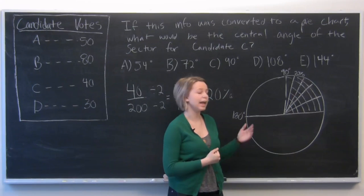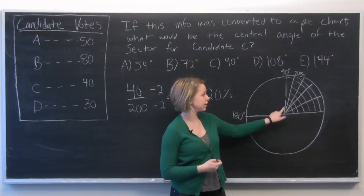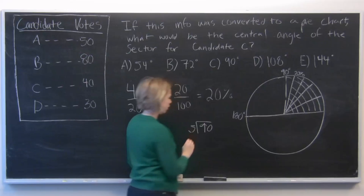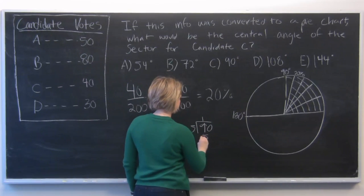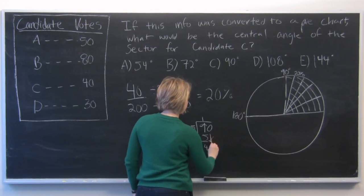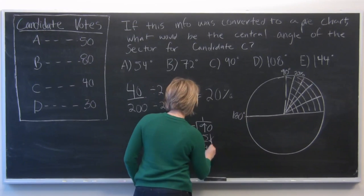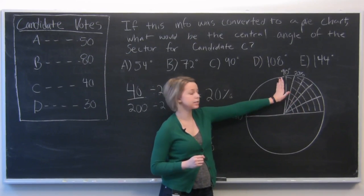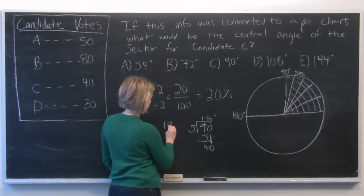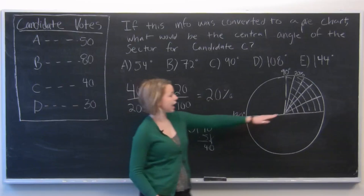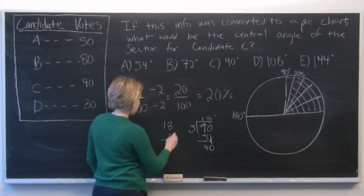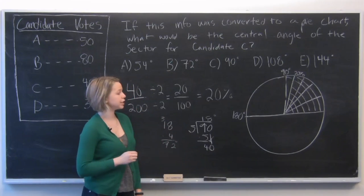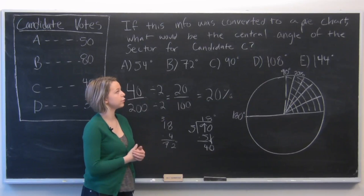So to calculate what angle this is at, we need to divide 90 degrees by five sectors, which will come out to 18 degrees for each of these five sectors making up 90 degrees. And if we multiply that 18 by 4, which is how many sectors make up candidate C's votes, we will get 72 degrees, which makes up the central angle for candidate C's pie chart.